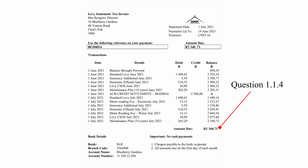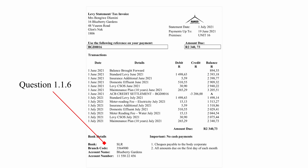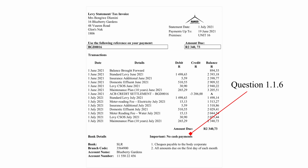The total amount due for the statement is R2340.73. This value includes 15% VAT, meaning VAT has already been included in this amount. The standard levy for June 2021 is R1498.63, which is part of the total amount due. The statement includes bank details so the client can make electronic bank payments or EFTs if they prefer to make payments that way.